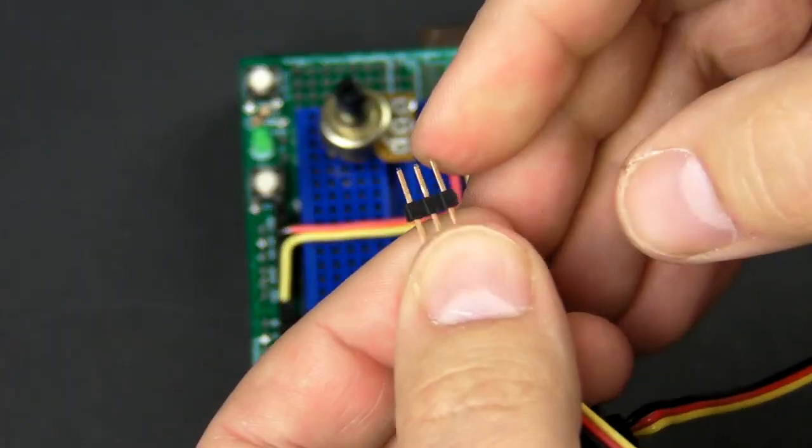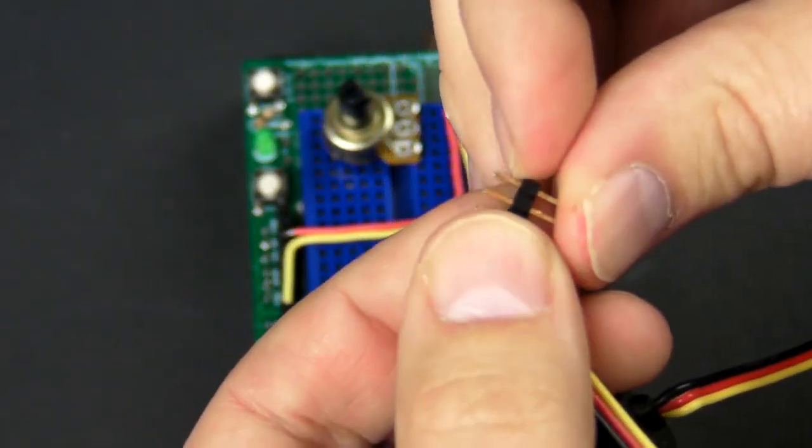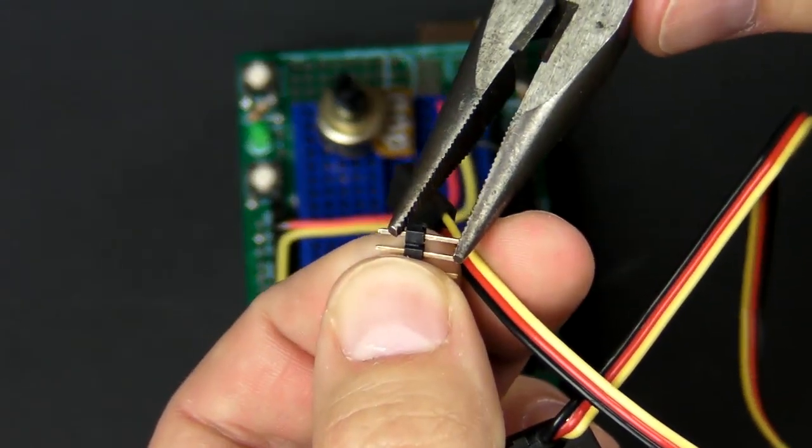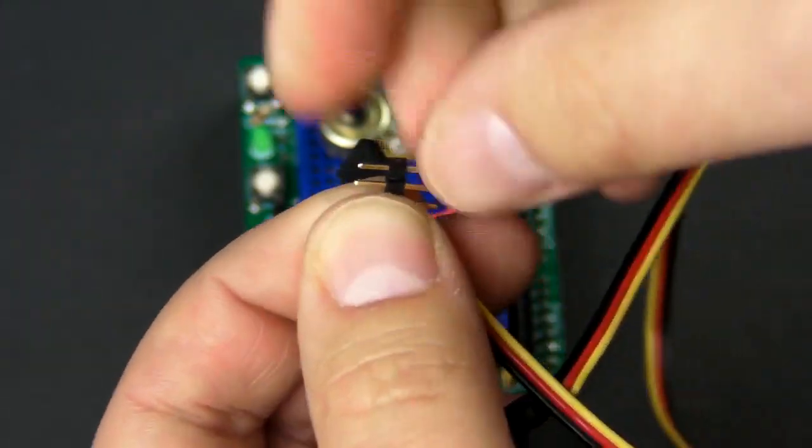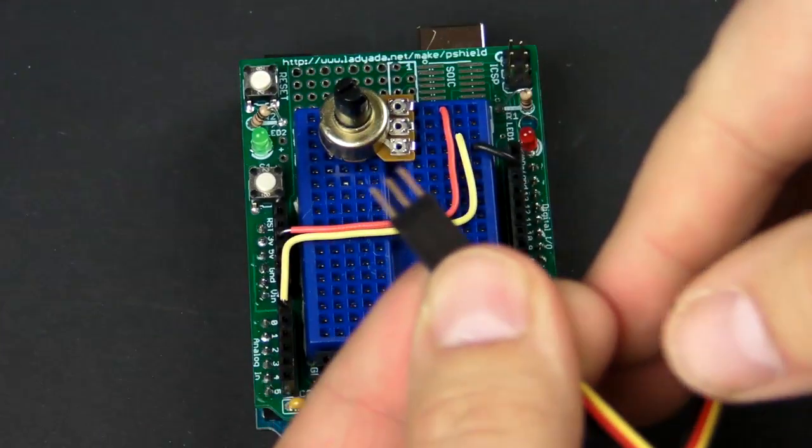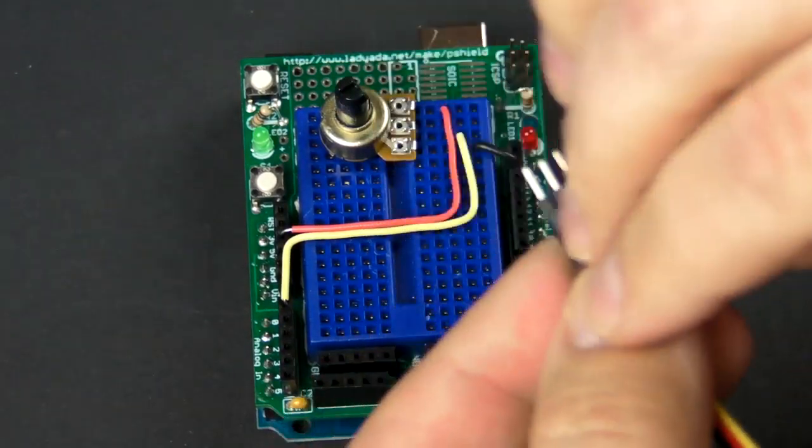I took a little header connector and I used pliers like this and I scooted down the plastic because a lot of times they're offset a little bit. And what that enables me to do is just plug it into the servo, and now I can plug it into a breadboard. You can also just use little scraps of wire.